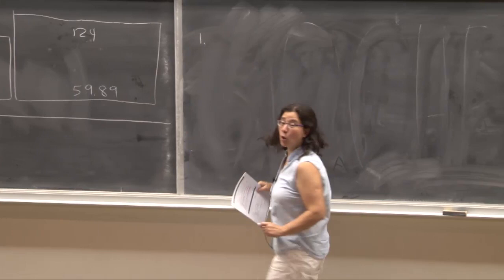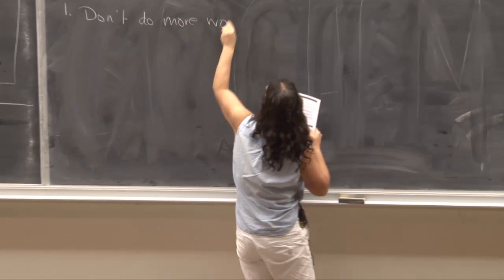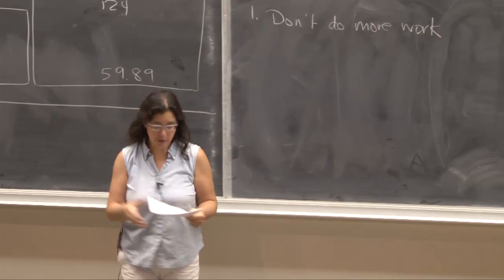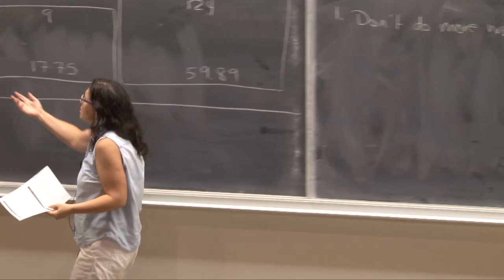Very important lesson. This is cookie lesson number one. Make note. Don't do more work than you need to. So in particular, you didn't actually have to calculate the cost per cookie to know that this one was the best. So don't do more work than you need. Now, if you want to save money, then why wouldn't you just get this box? This is the cheapest box.